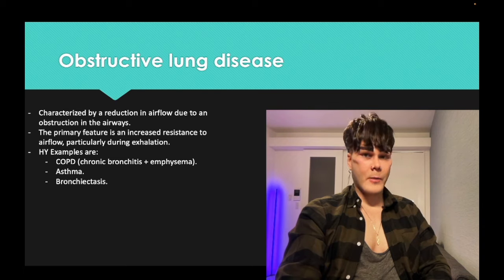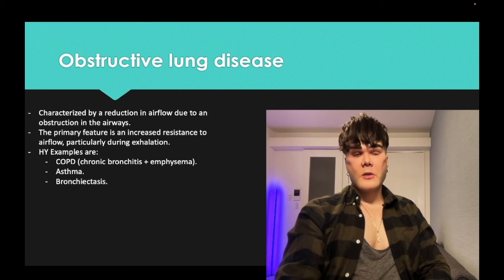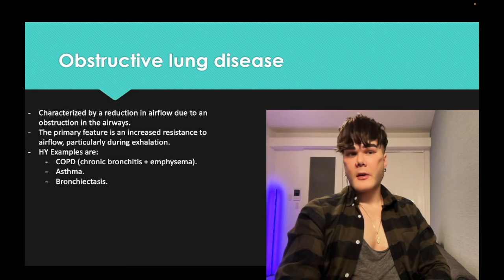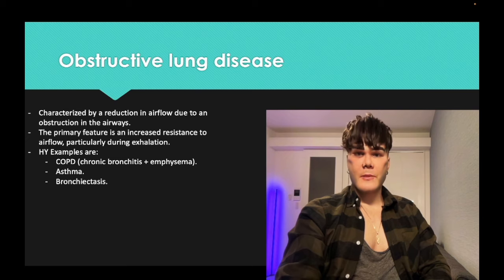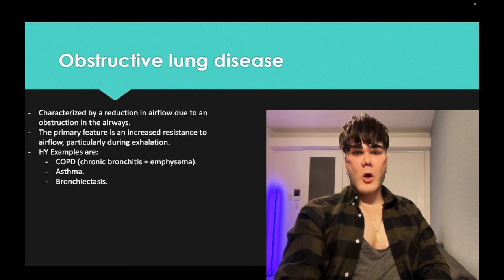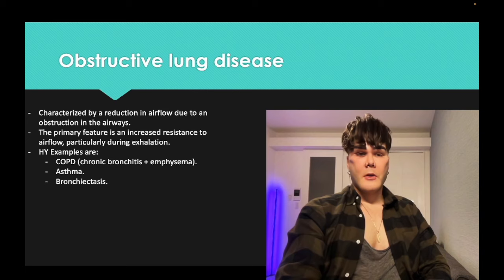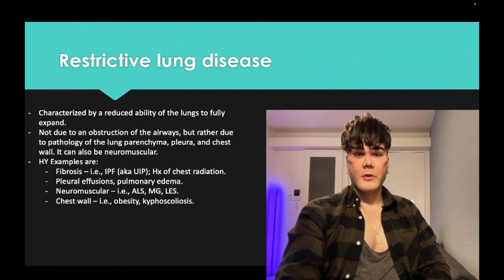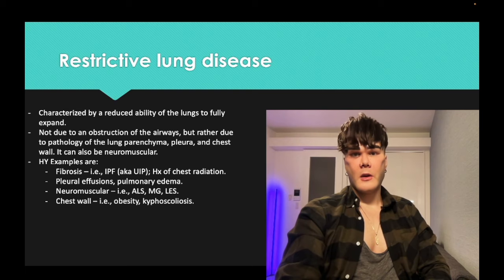An 8-year-old boy with a dry cough and prolonged expiratory phase — that's asthma. A 44-year-old smoker with a prolonged expiratory phase — that might be early emphysema. Bronchiectasis is dilation of the airways due to loss of musculature. Restrictive lung disease is inability to inspire fully due to decreased pulmonary compliance such as fibrosis or amyloidosis.